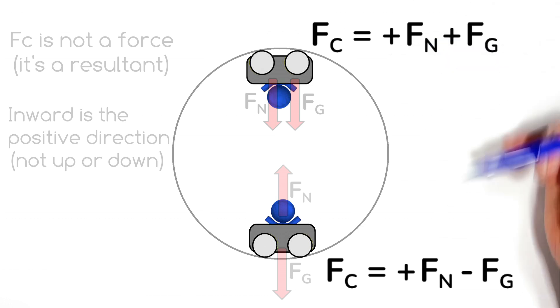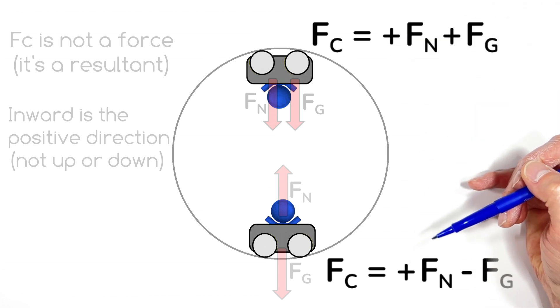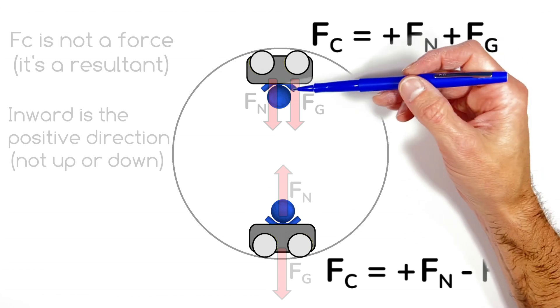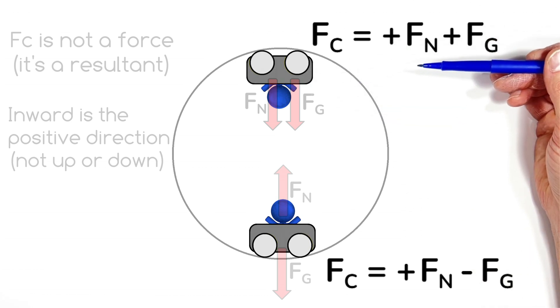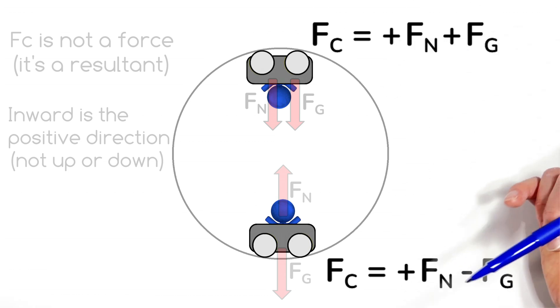And you can see from the top to the bottom of the circle, these two equations are completely different. And so what happens is when you try to memorize these sort of trends in signs between FN and mg, you end up being right in one spot and wrong in another.